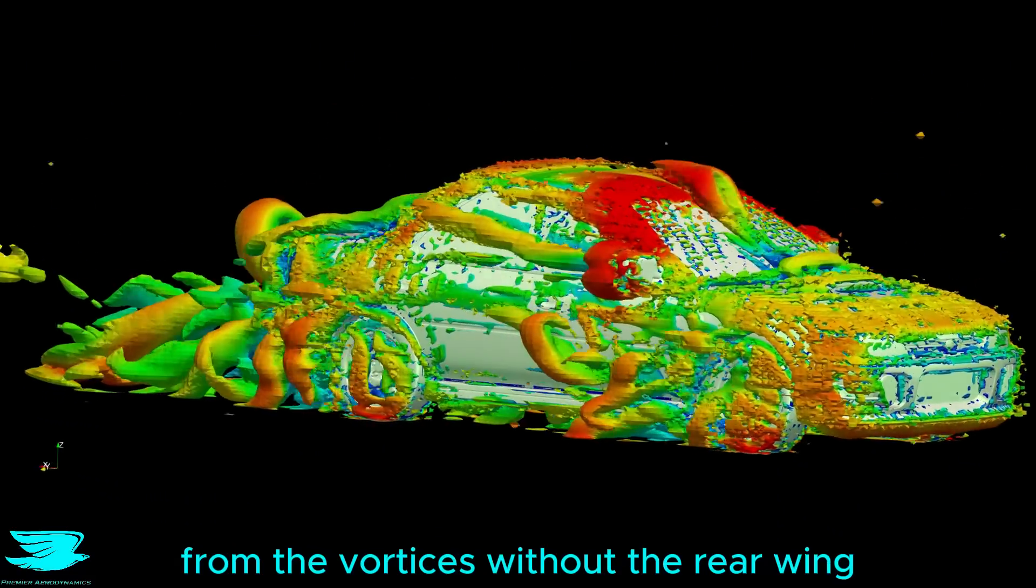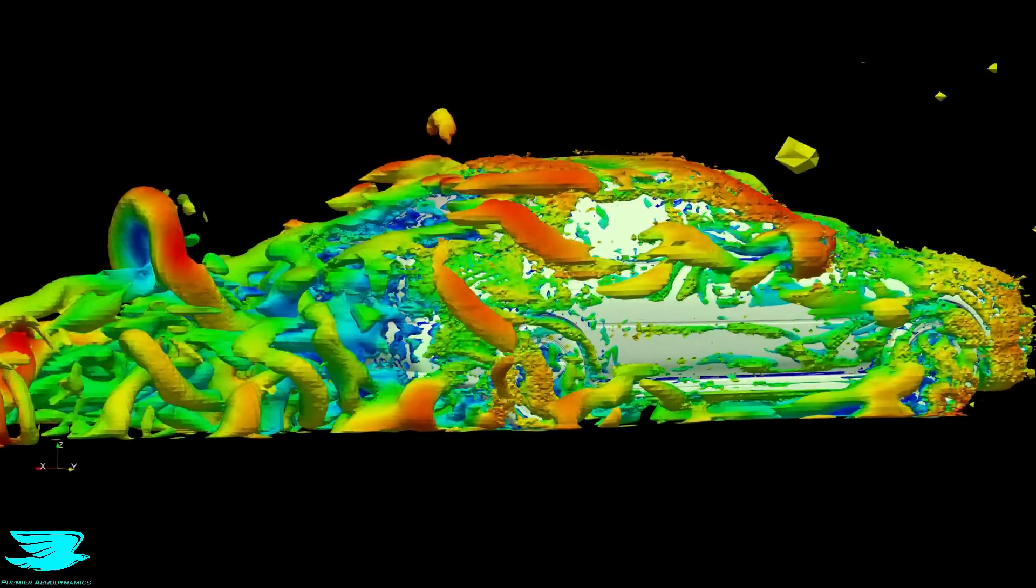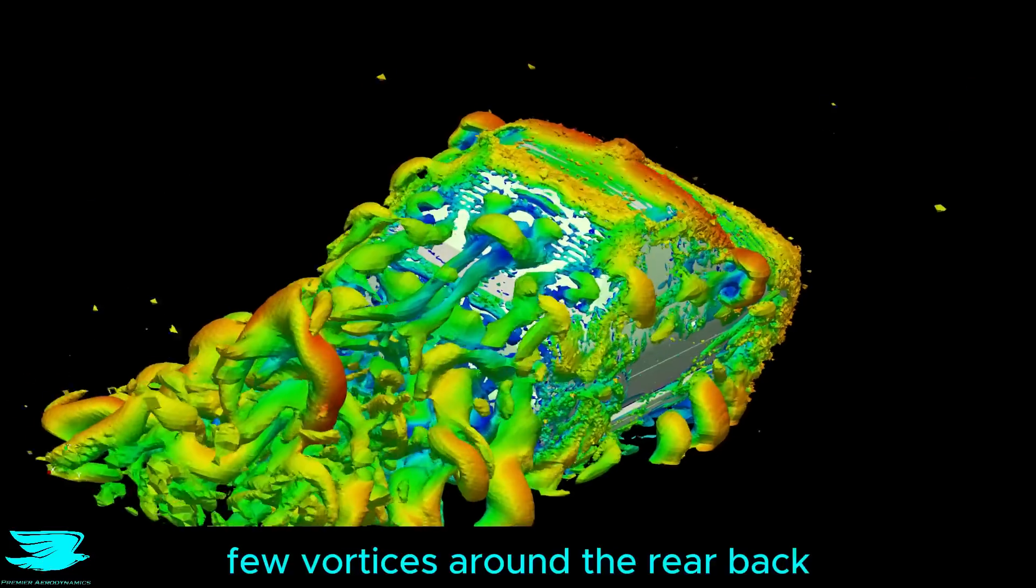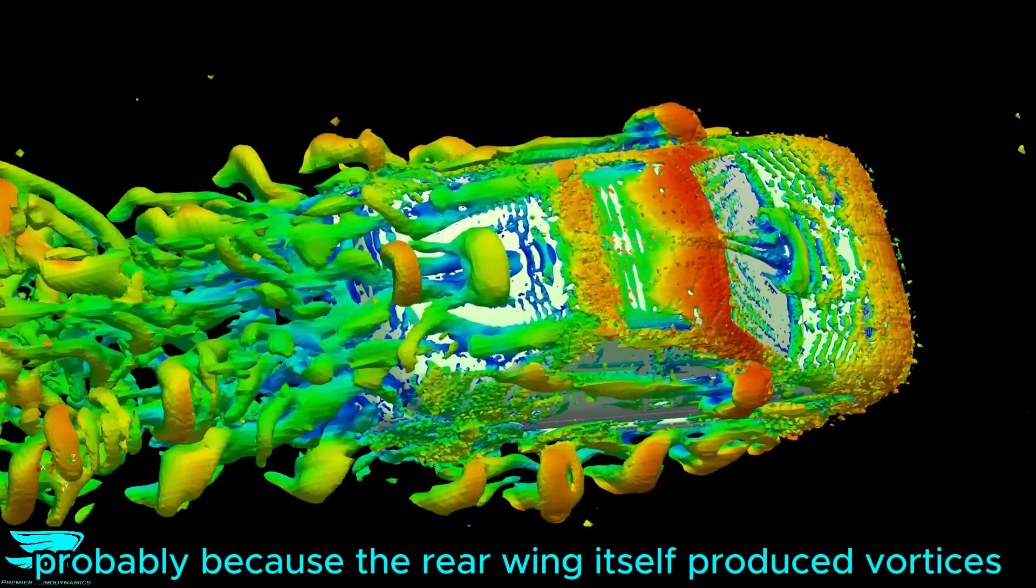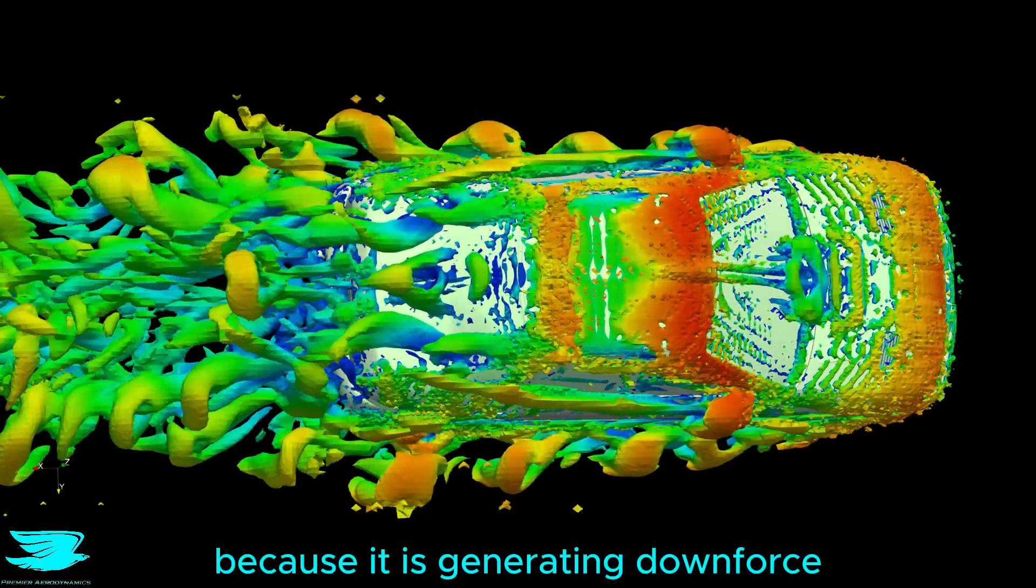From the vortices, without the rear wing, they're not being kicked up as much, and there seems to be slightly fewer vortices around the rear back, probably because the rear wing itself produced vortices as well, because it is generating downforce.